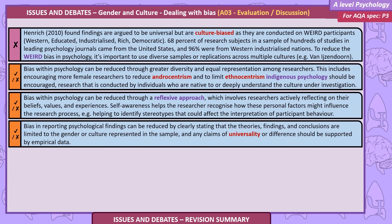Dealing with bias: Henrich (2010) found that findings argued to be universal are actually culture-biased, as they are conducted on WEIRD participants — Western, Educated, Industrialised, Rich and Democratic. 68% of research subjects in a sample of hundreds of studies in leading psychology journals came from the United States, and 96% were from Western industrialised nations. To reduce the WEIRD bias, it's important to use diverse samples or replications across multiple cultures.